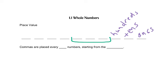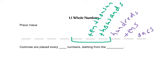We repeat in groups of three. So this next group is the thousands group, and we have the one thousands, or just the thousands. And then we have the ten thousands, and then we have the hundred thousands.